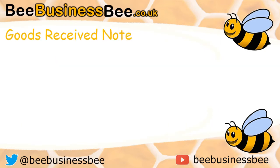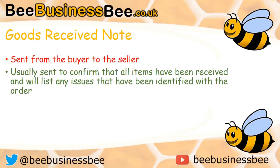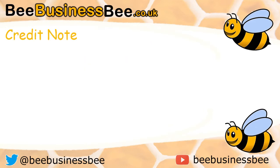The buyer then writes to the seller with a goods received note, effectively confirming that everything has been received — or pointing out issues such as missing items. If items are missing, the seller could then sort out a credit note or send out the missing items, depending on whether it was a mistake, perhaps with the courier.